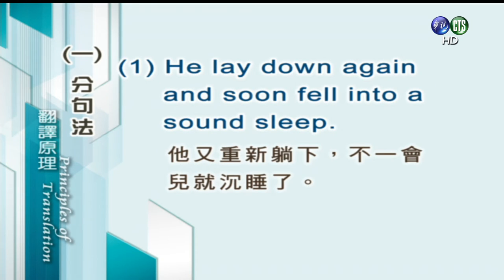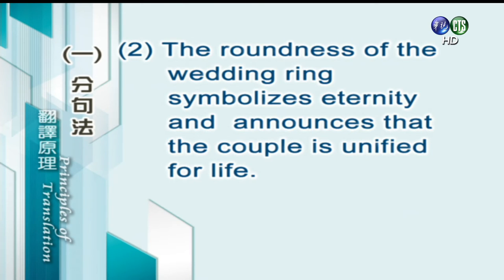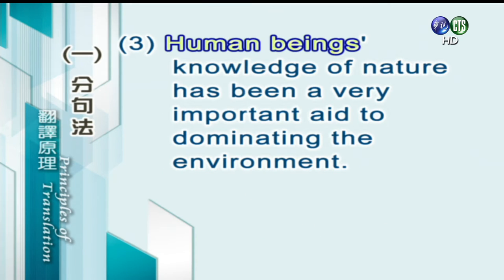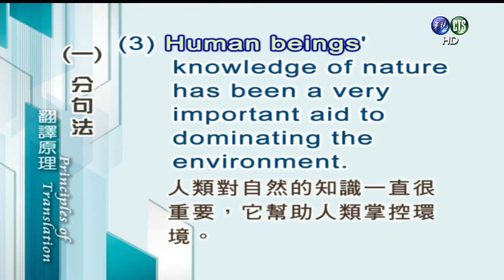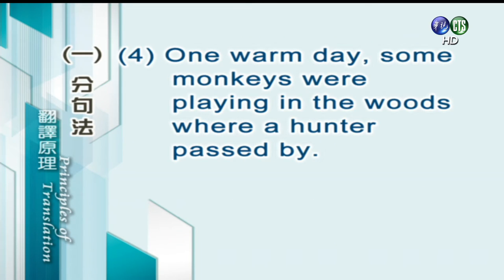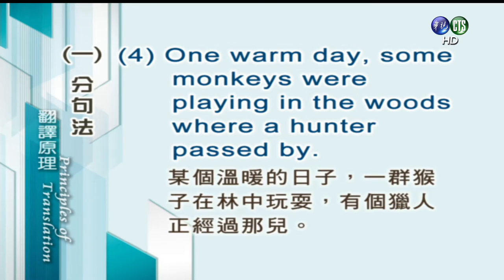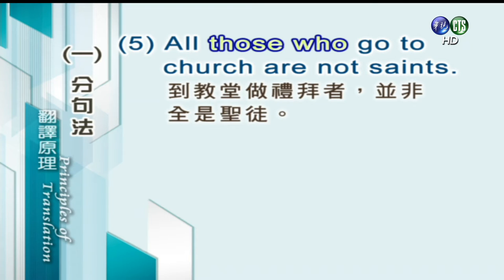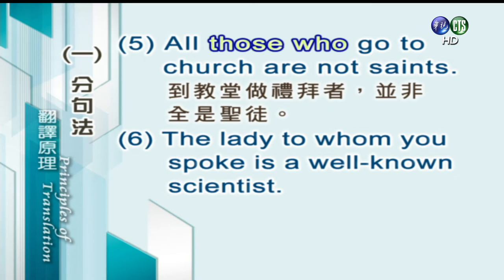原文是一句英文，我们译成两句中文，这就是分句法。以下例子很类似：The roundness of the wedding ring symbolizes eternity and announces that the couple is unified for life，译成：婚戒的圆形象征永恒，宣告这对新人永结联理。另一个例子：The church are not saints，译成：到教堂做礼拜者并非全是圣徒。The lady to whom you spoke is a well-known scientist，译成：你对她说话的那位女士是位著名的科学家。